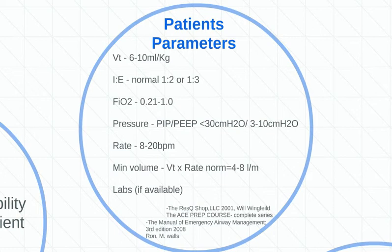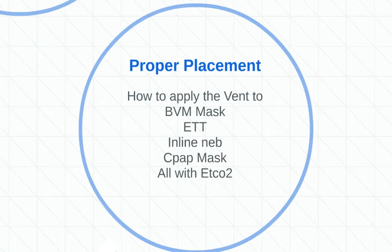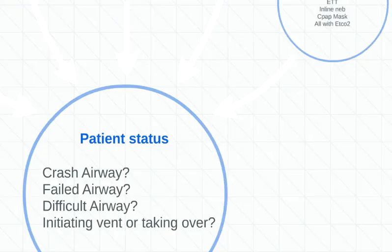Don't forget to check labs if they're available — say, during an interfacility transfer. Check their potassium, their pH, their bicarb, all those things. They'll give you insight into what's been happening with the patient and how you can use the vent to fix them. For proper placement, you need to know before any scene how to apply the vent to a BVM, an ETT, how to do an inline neb, and how to use a CPAP mask with ETCO2. Hopefully I'll be able to put up a lab video for all of this.